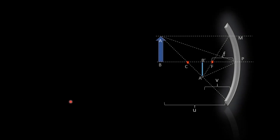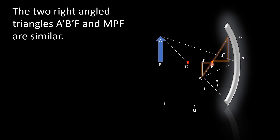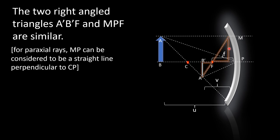From the ray diagram, we observe two triangles: triangle A'B'F and triangle MPF. It is a curved line but this is a tiny gap that can be neglected. If we consider the right line perpendicular, then triangles MPF and A'B'F are similar.